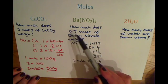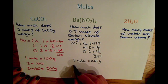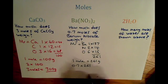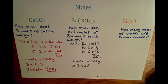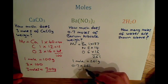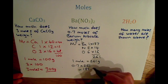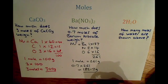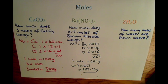And the question has asked us what does 0.7 moles weigh? So we do 0.7 times by 261 on the calculator, and that equals 182.7 grams of barium nitrate.